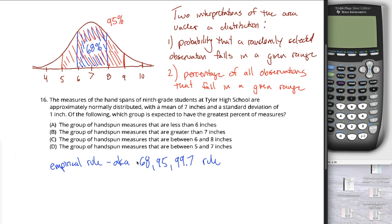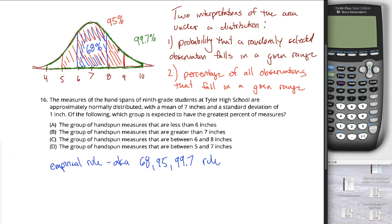The 95 in the 68-95-99.7 rule tells you that 95% of the area falls within two standard deviations of the mean. Two standard deviations below 7 is 5, two standard deviations above 7 is 9, so the area shaded in red is 95% of the total. The 99.7 part tells you that 99.7% of the area falls within three standard deviations of the mean — damn near all of it.